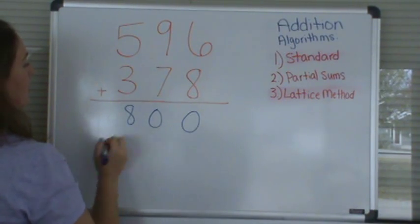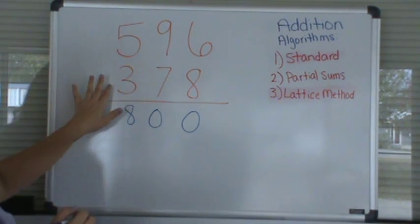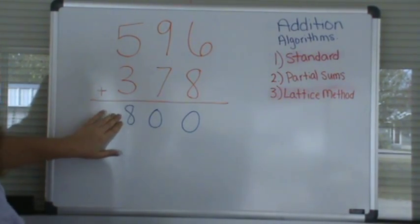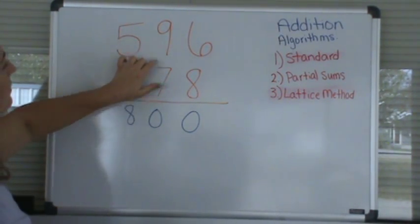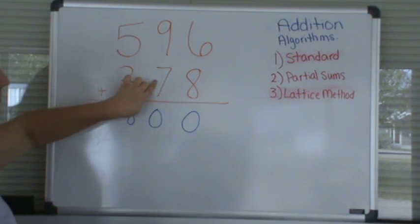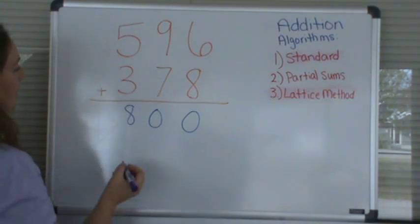And it's important that we line our answer up where we are starting. So we're starting with the hundreds value, we need to line it up with the hundreds value. Next we'll add 90 plus 70, since this is in the tens place. 90 plus 70 is 160.